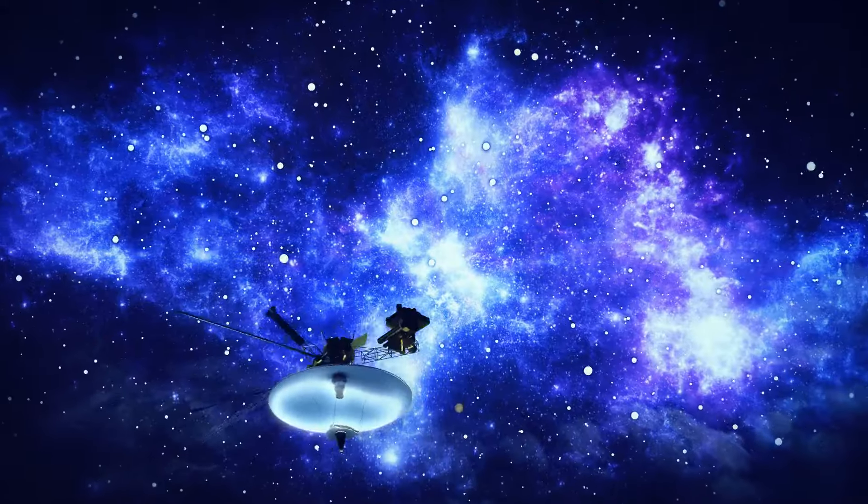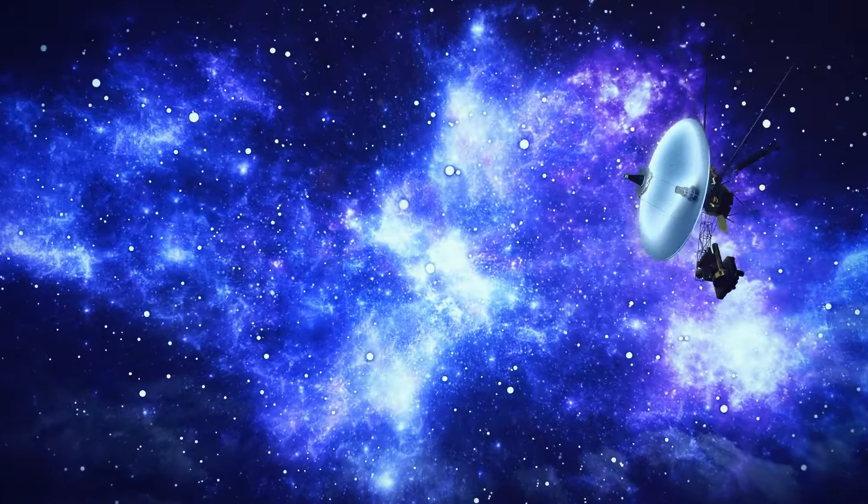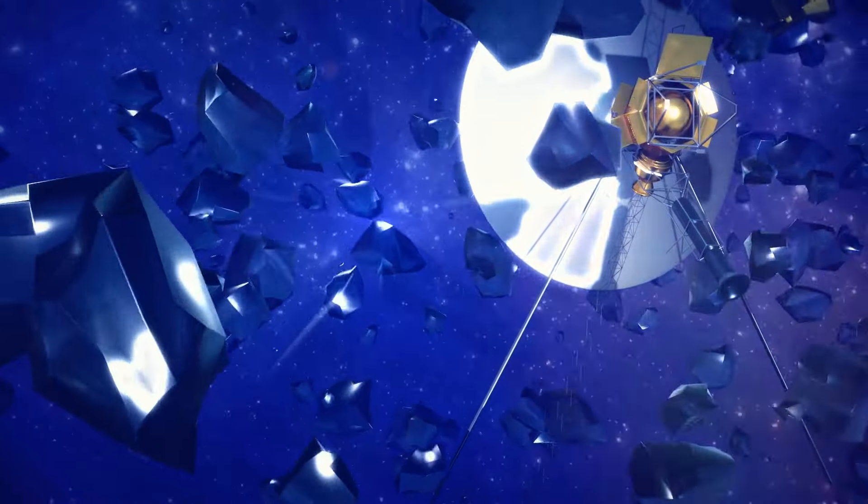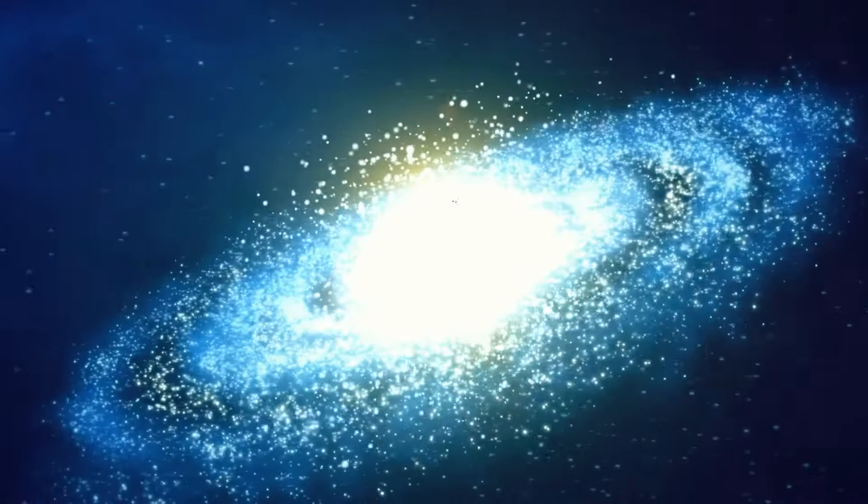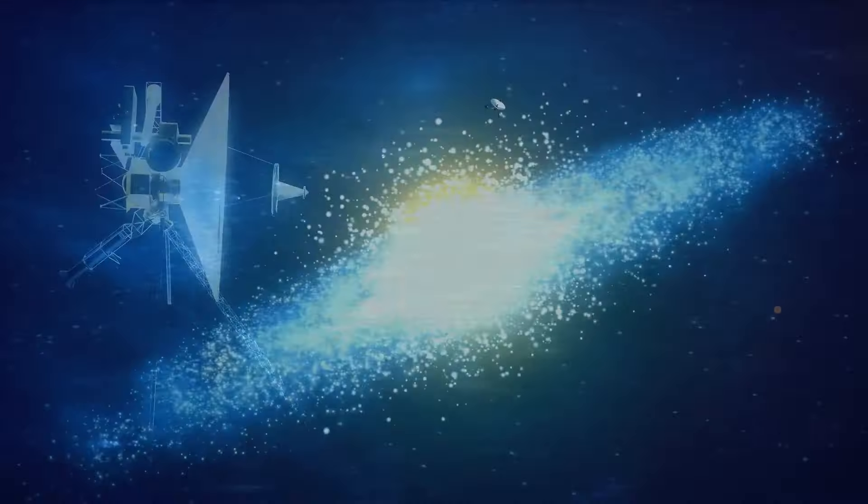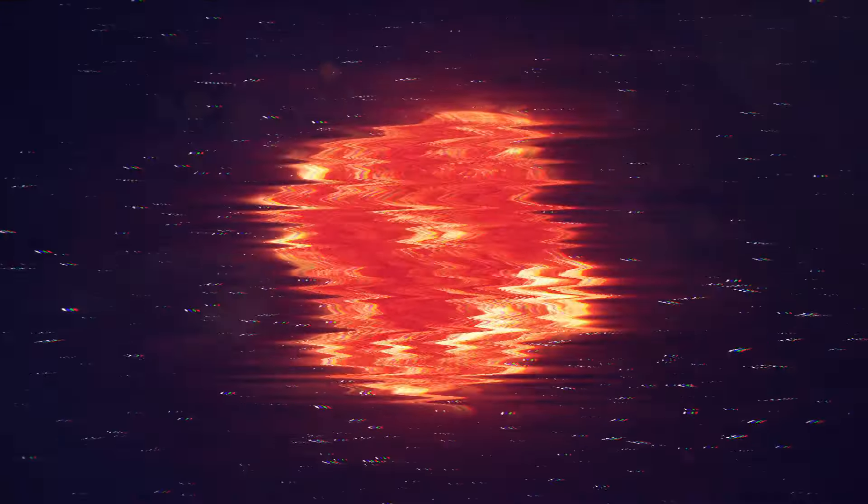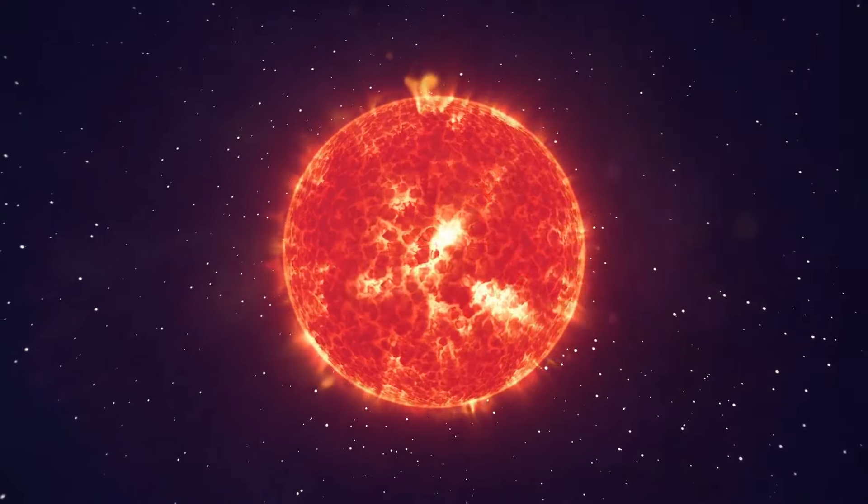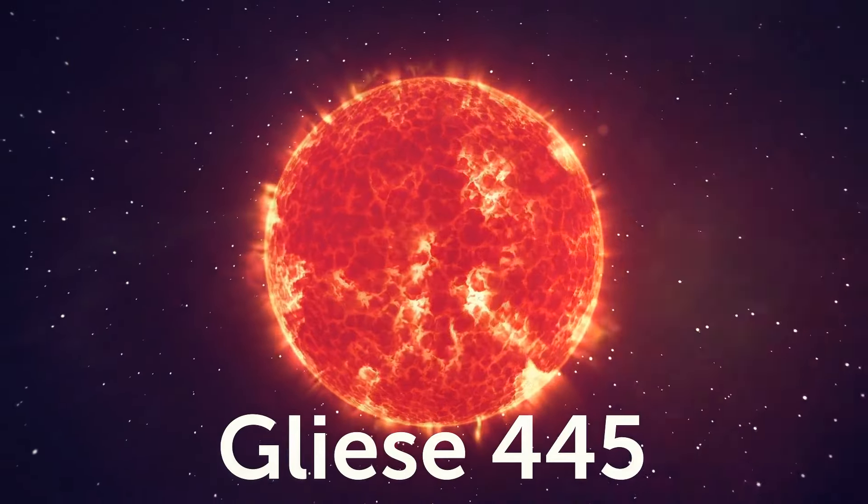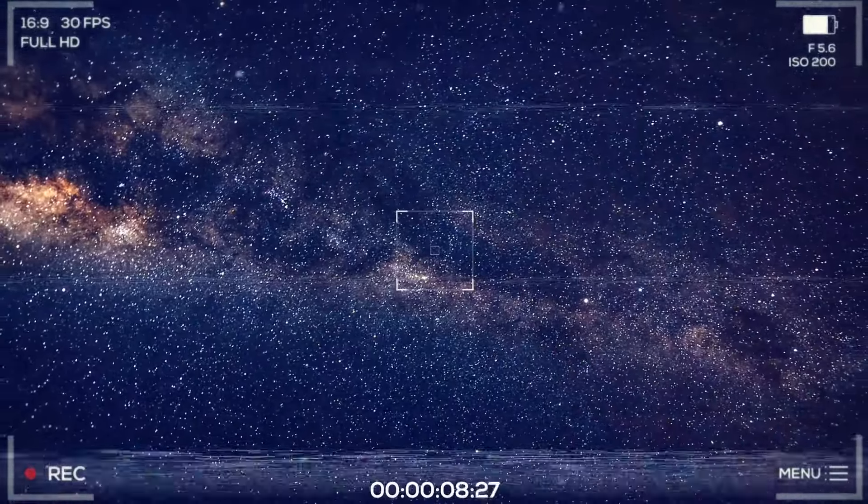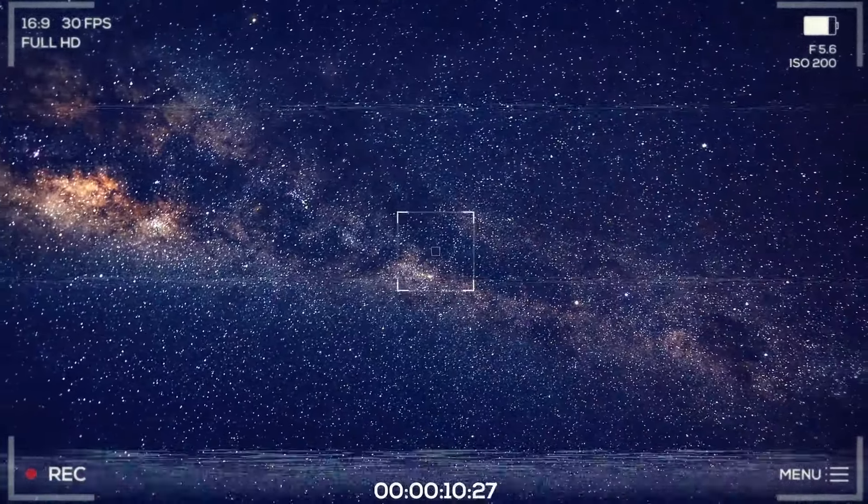It'll keep in touch with Earth at least until 2025. But eventually, we'll lose the connection with it for good. In 300 years, it'll reach the borders of the Oort cloud. And in 30,000 years, it'll finally leave the solar system. And if nothing happens to it along the way, in another 10,000 years, Voyager 1 will approach red dwarf star Gliese 445 in the giraffe constellation.